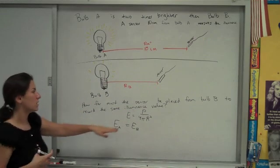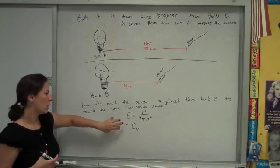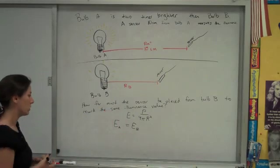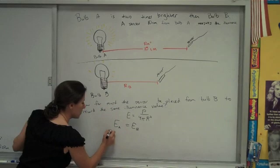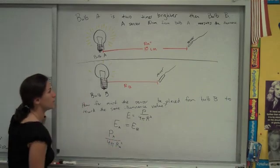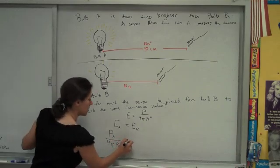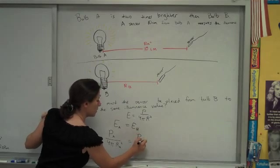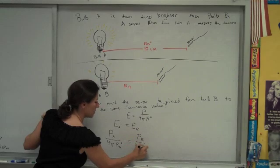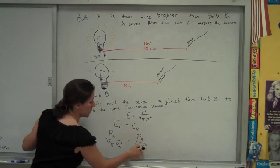And then we can go ahead and sub in this illuminance equation once with bulb A's values and once with bulb B's values. So let's start P for bulb A, that's power, and the distance for bulb A, which actually we know we could sub in there too, is P for bulb B, and the distance from bulb B squared, and that's what we're looking for.